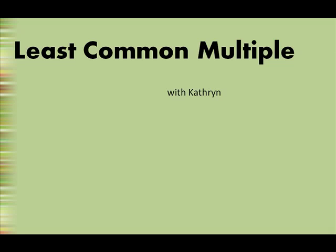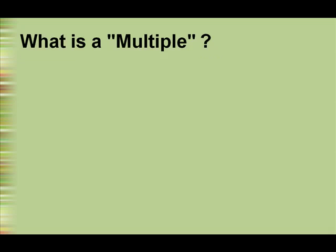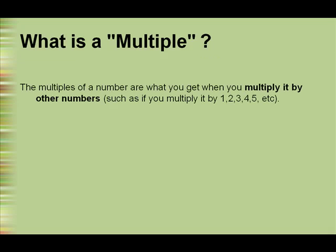Least common multiple. So what is a multiple? The multiples of a number are what you get when you multiply it by other numbers, such as 1, 2, 3, 4, and so on.